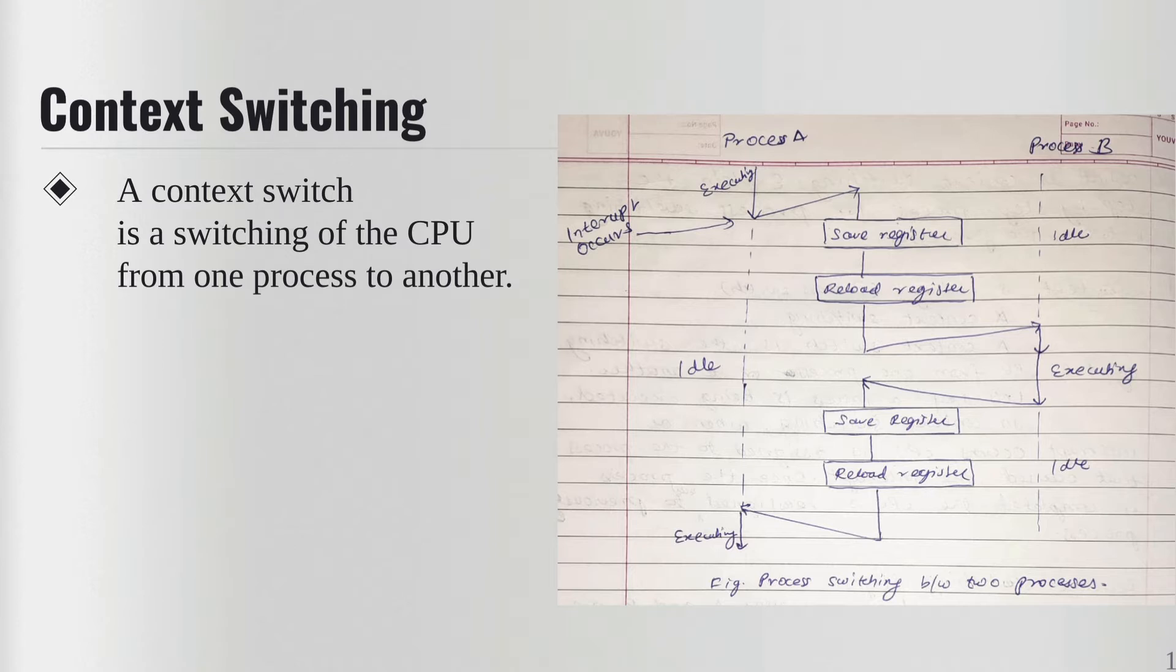Let me give you an example. Let's say there are two processes, Process A and Process B. Initially they are in the ready queue. Now let's say the CPU gets assigned to Process A and Process A starts executing.